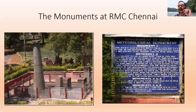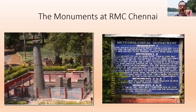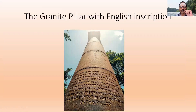When you come to the RMC Chennai campus, this is the site where the first observatory was opened in India, which we have seen in the last video. There are several monuments here — a very big granite pillar with a board describing all the monuments in the RMC Chennai campus. Here is that pillar with a very nice English inscription on it.